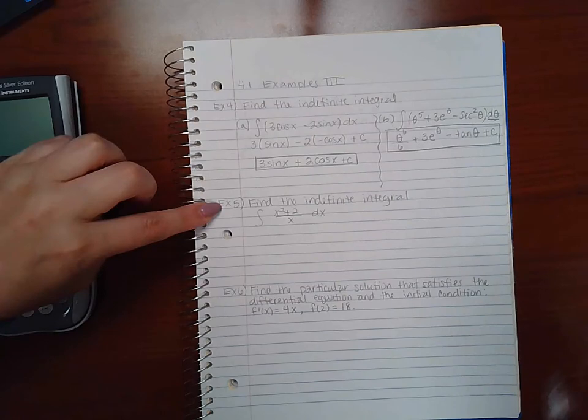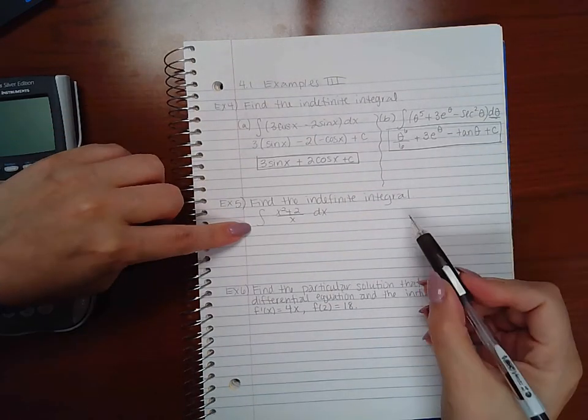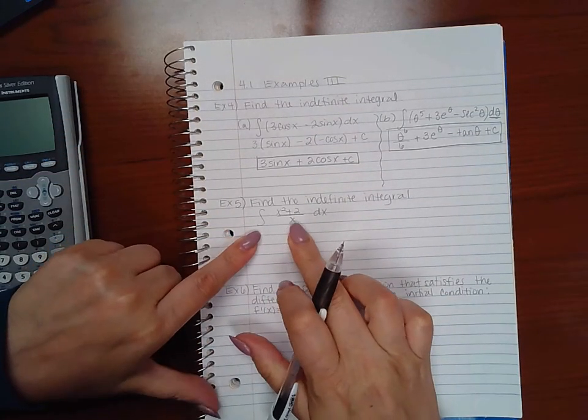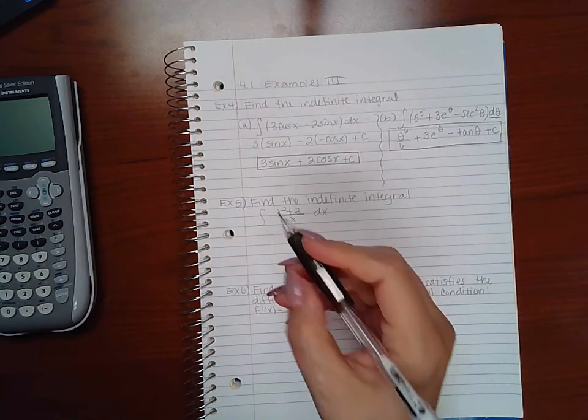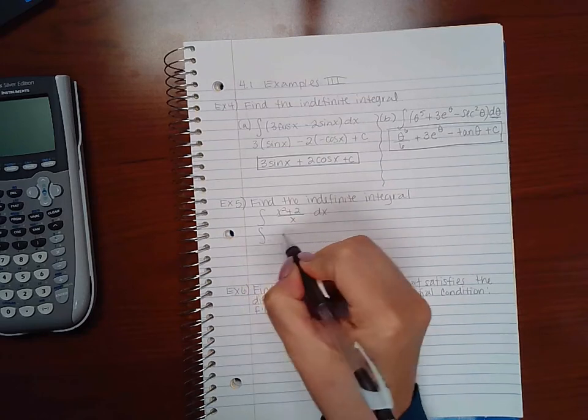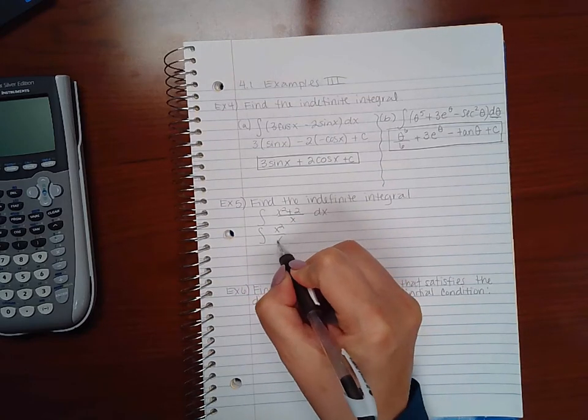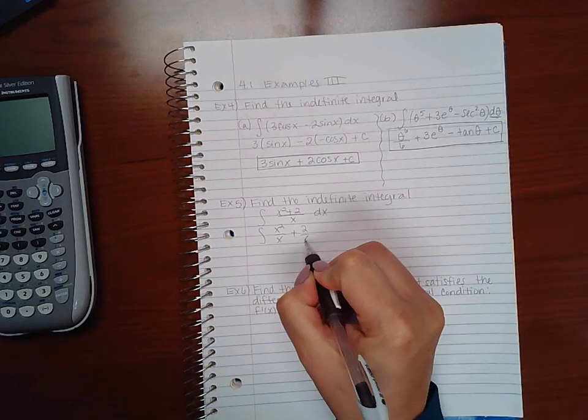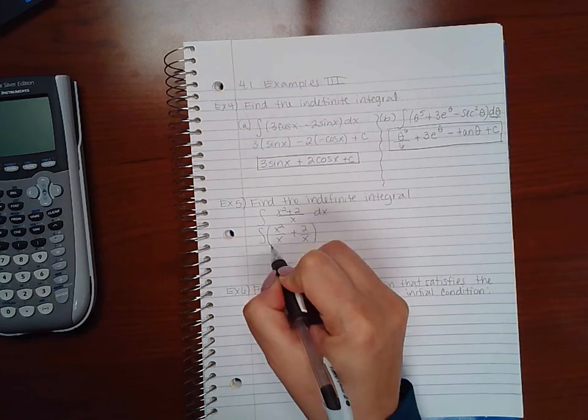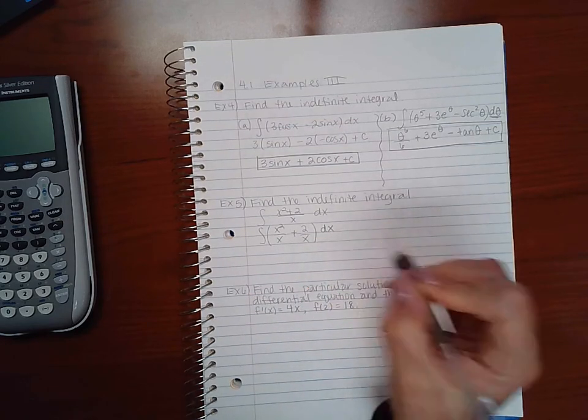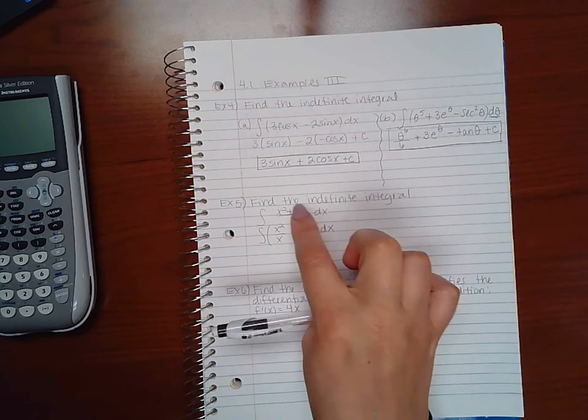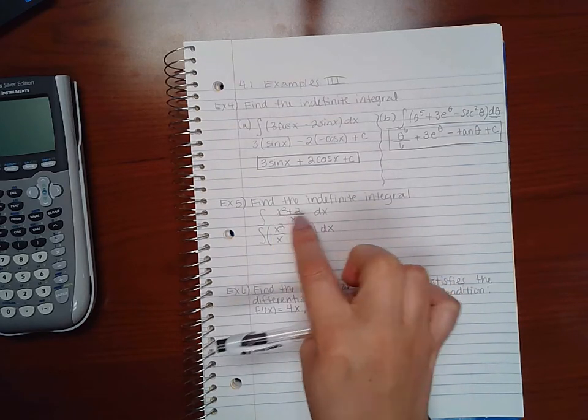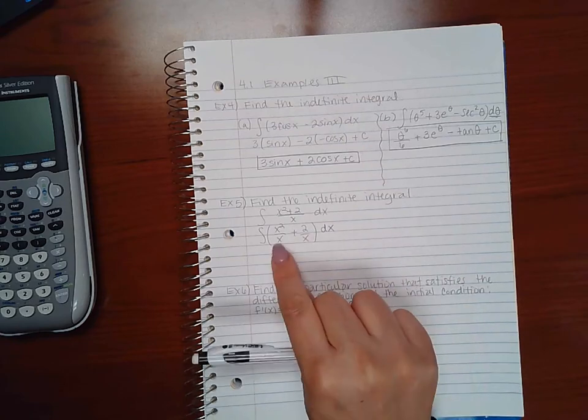Now, example five says find the indefinite integral. So here we have two terms, but notice that it's in one fraction. So the first thing we want to do is separate this so that we have x squared over x plus two over x. Now because it's two terms, I do need to put my parentheses around it, whereas here it's just one big fat fraction, so I didn't need the parentheses around it. But now I've got two separate fractions that I still need to integrate.